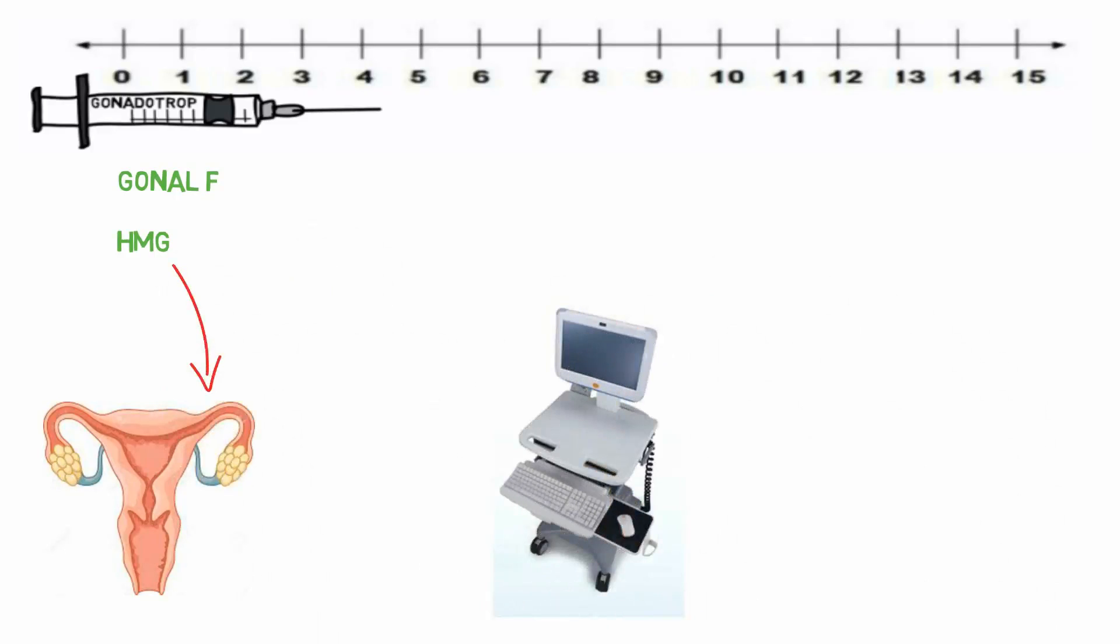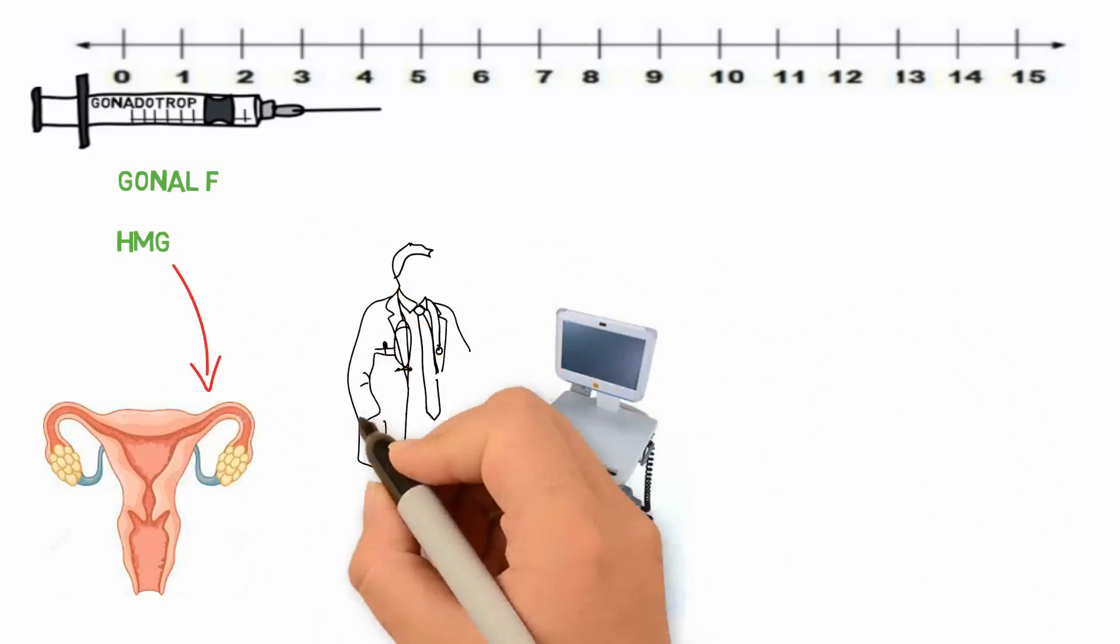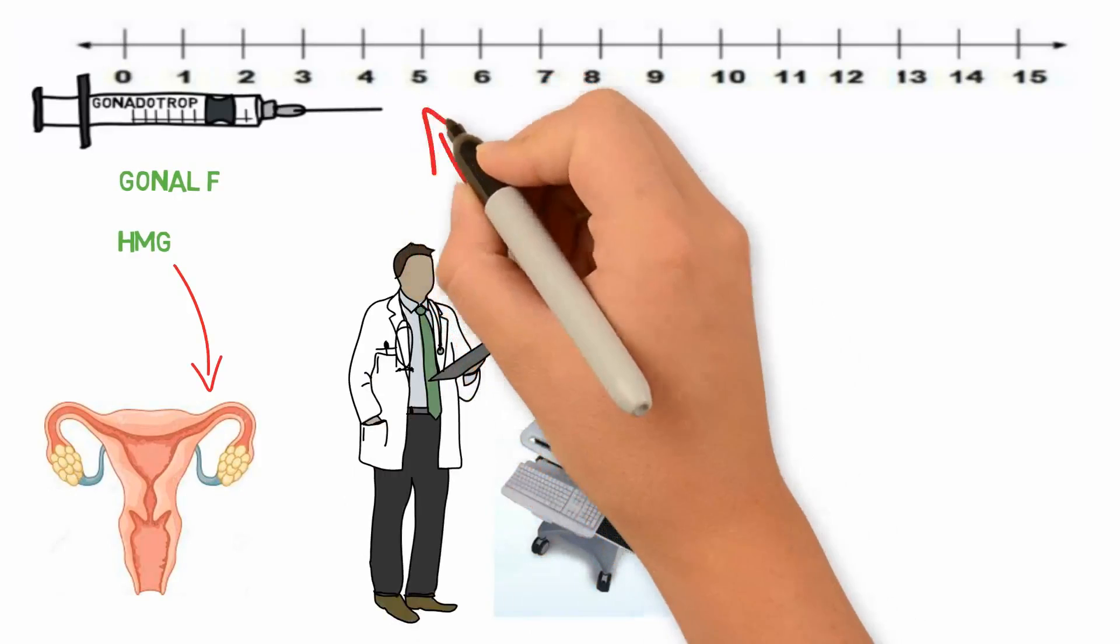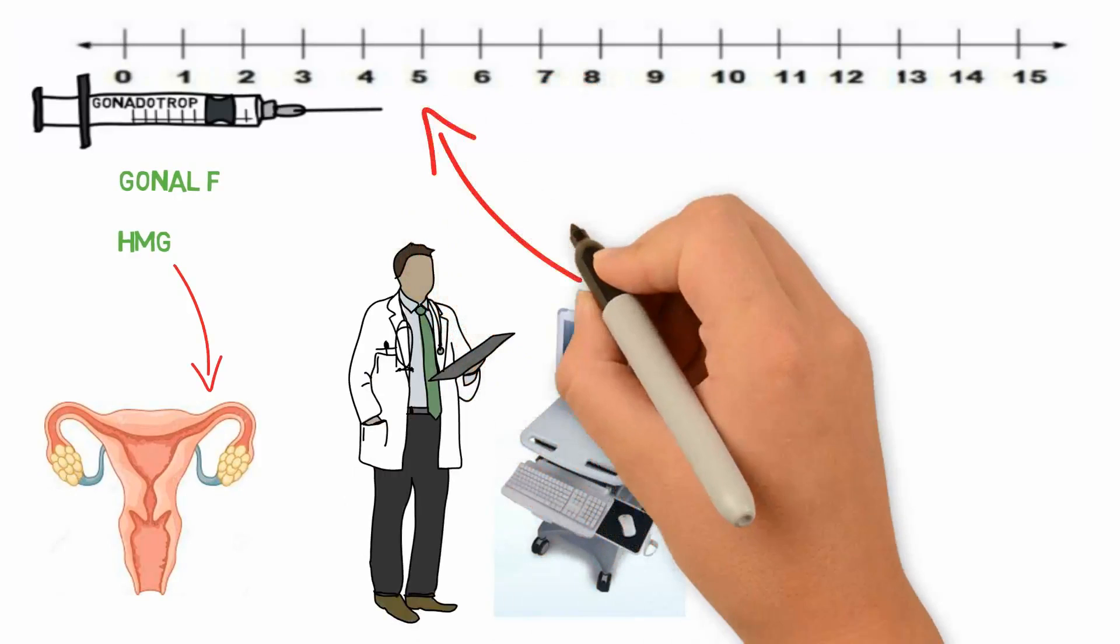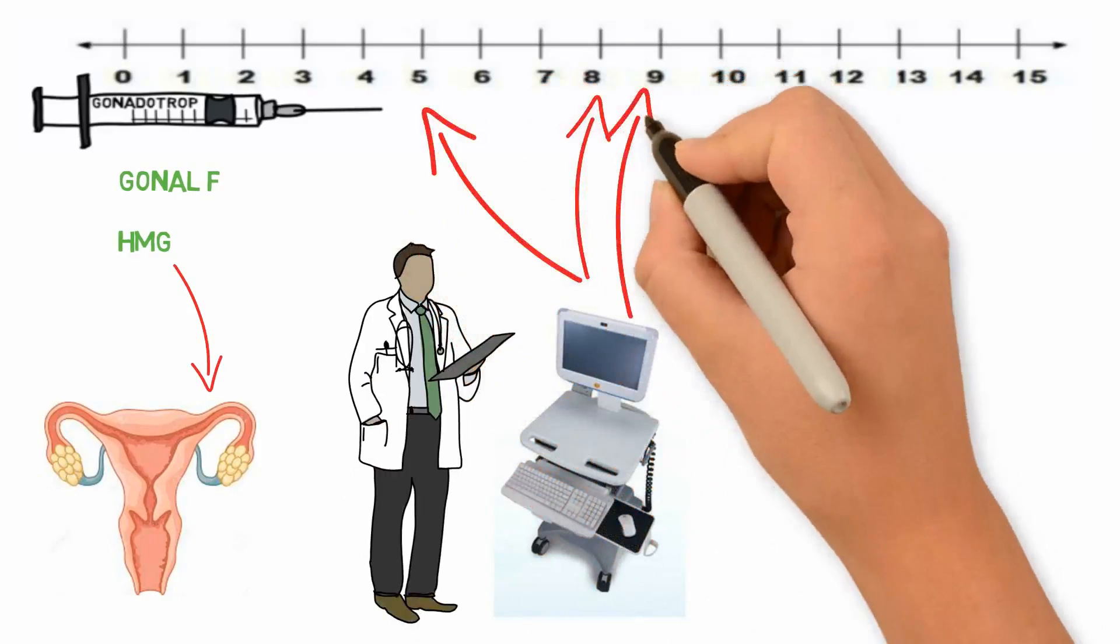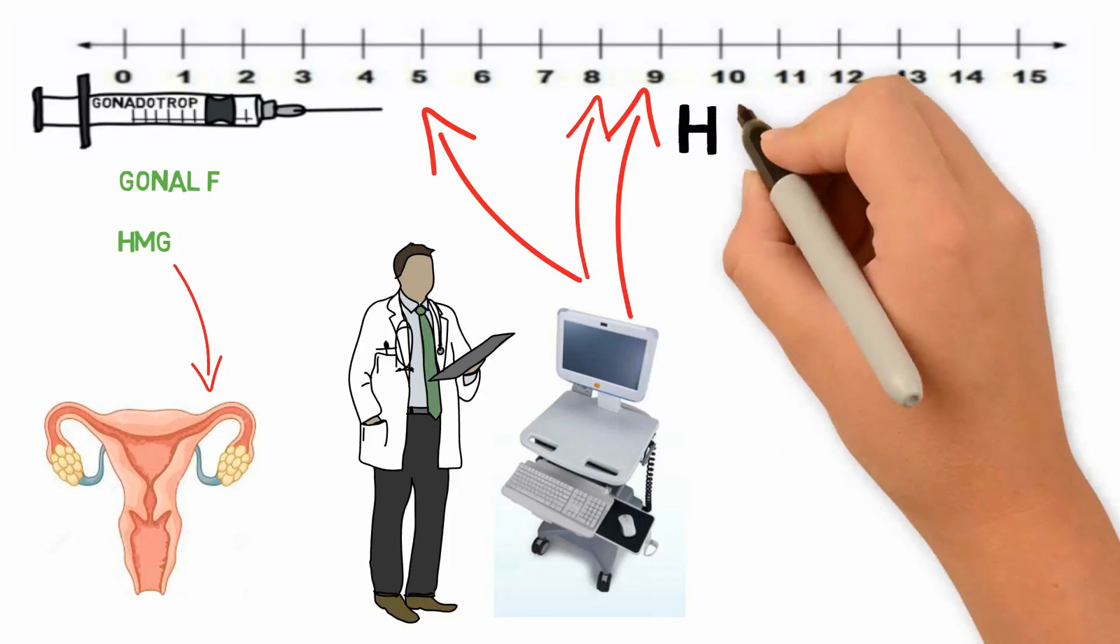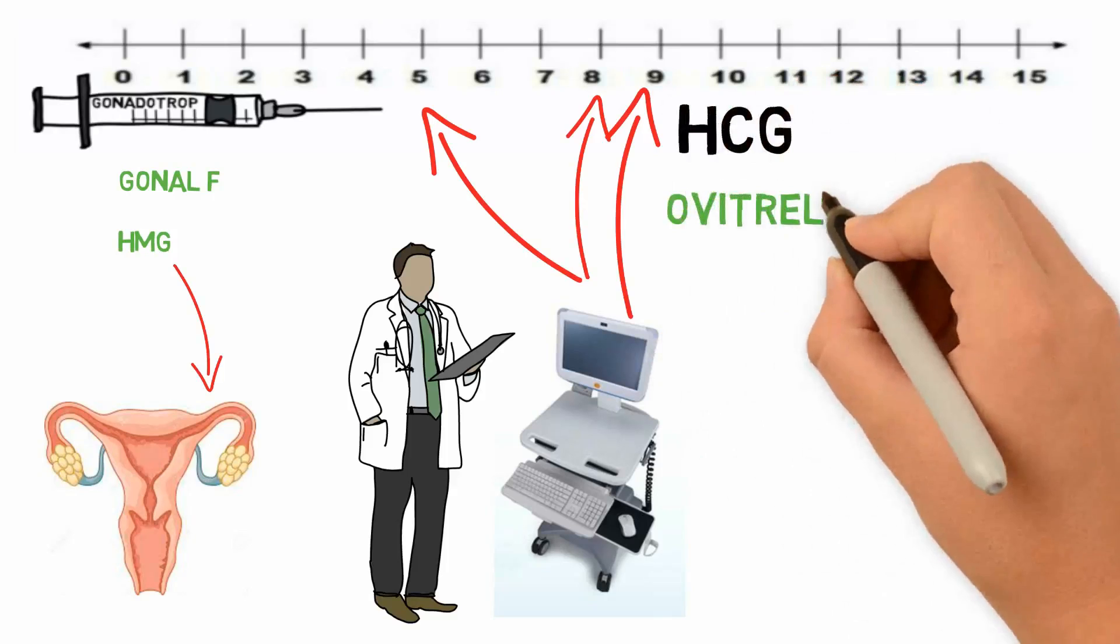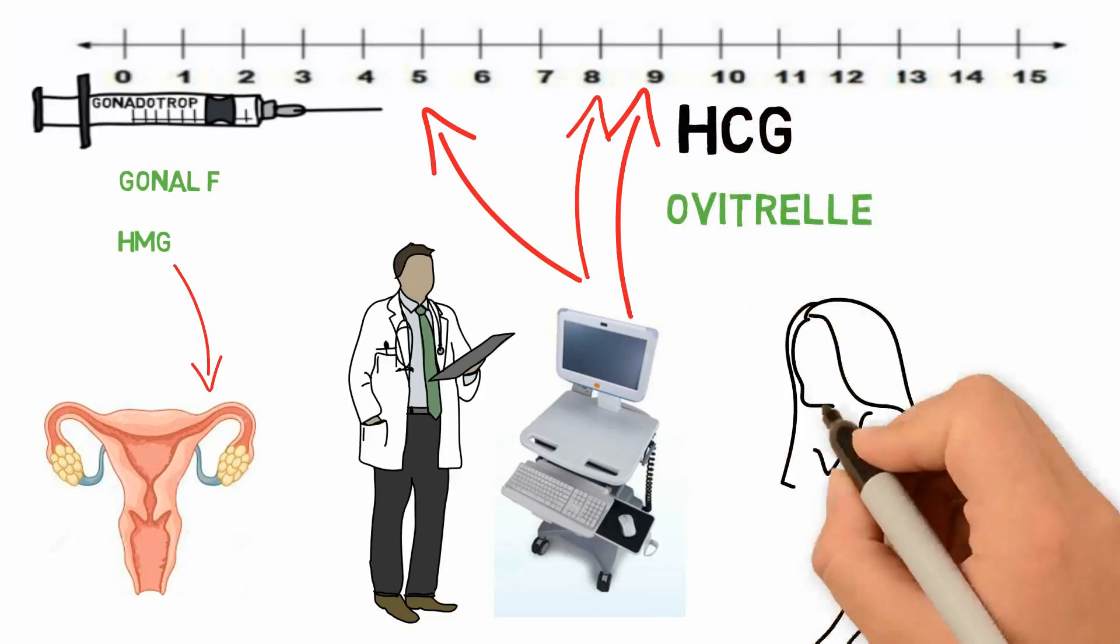In order to adapt the medication to the body's response, which varies even within each cycle, we monitor the ovarian follicle development through ultrasound scans and occasional blood tests. We follow the medication timetable outlined and prescribed by the gynecologist, which is designed for each patient.